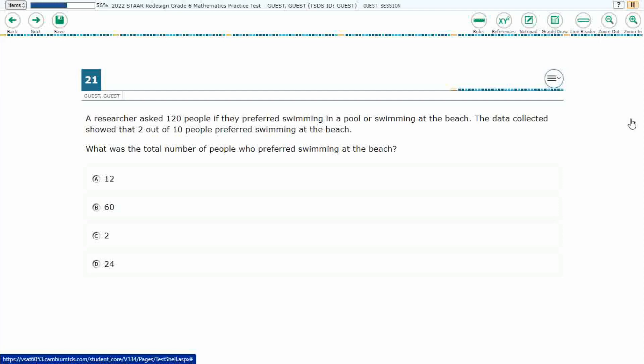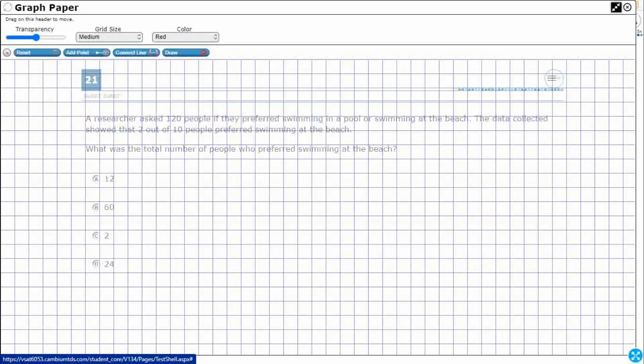So we have a researcher asking 120 people, giving them two choices: swimming in the pool or swimming at the beach. 2 out of 10 people preferred swimming at the beach. So we need to turn that into a proportion so we can find the total number of people.